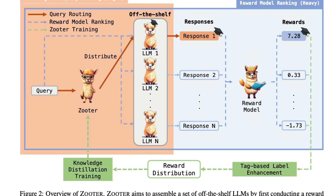There are two independent systems. One is Reward Model Ranking (RMR), which is computationally heavy. The second is reward-guided query routing, which is lightweight. One very important attribute of this setup is a ranker — which is, in the case of ZOOTER, a 76 million parameter model, technically a DeBERTa model. This ranker is trained from the RMR setup, where multiple LLMs generate responses and a reward model generates rewards based on those responses.